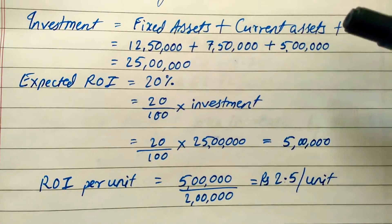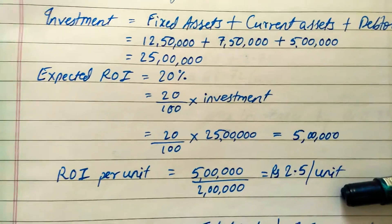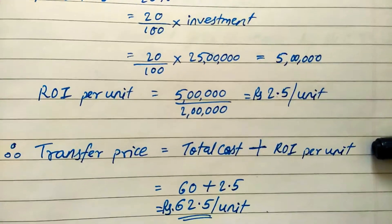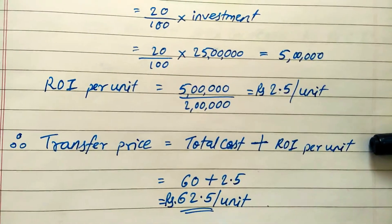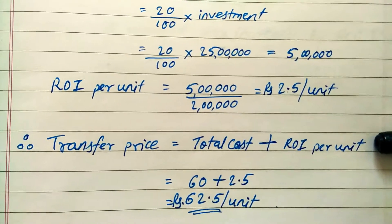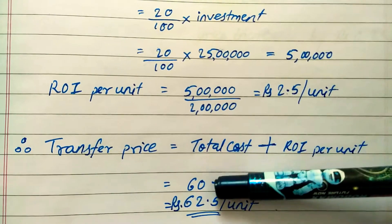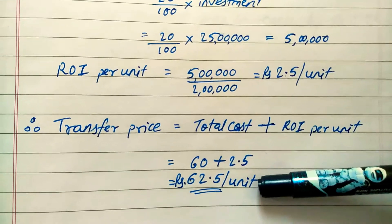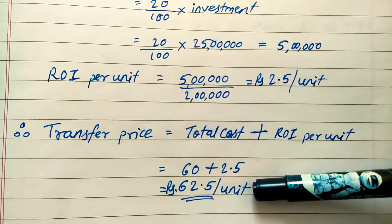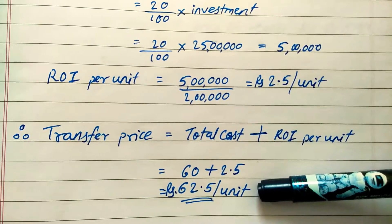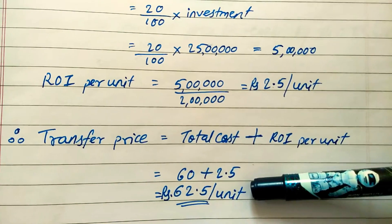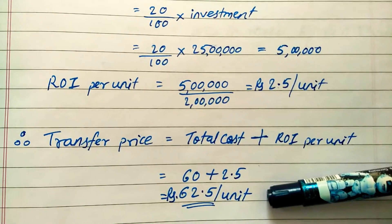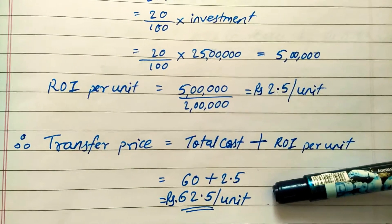Now we can calculate the transfer price. The formula is: Transfer Price = Total Cost per unit + ROI per unit. Total cost per unit is ₹60, plus ROI per unit of ₹2.50, so the transfer price comes to ₹62.50 per unit. That is ₹62 and 50 paise per unit — this is the answer to the first part of the question.